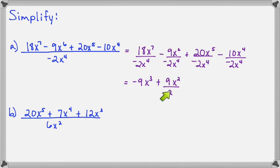It's okay if this can't be changed to a whole number. Our only job is to make it as simple as possible. And, 9 over 2 is as simple as that number can get. So, 20 divided by negative 2 makes negative 10, and x to the 5th over x to the 4th makes x. So, let's write minus 10x.